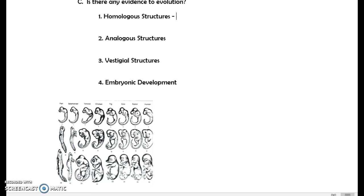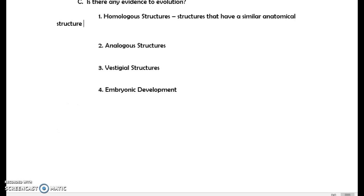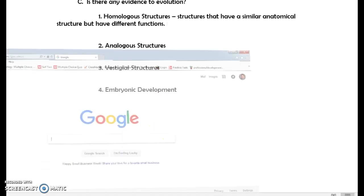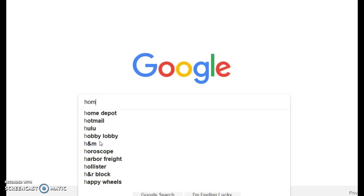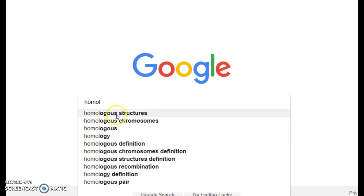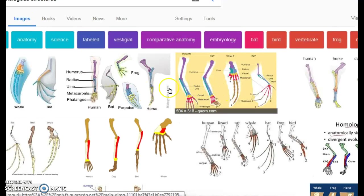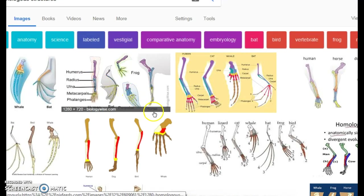So homologous structures are structures when compared between two different organisms that have a similar anatomical structure, but have different functions. And I doubt that you have any background knowledge on these, so what I'm going to do is I'm just going to pull up Google to show you what are the most common examples. So if I put homologous structures, it's one of the first ones to fill in. And you see here, a few of them, a lot of these are appendages.